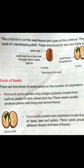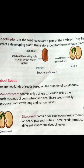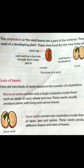Examples of monocot seeds are corn, wheat, and rice. These seeds usually produce plants with long and narrow leaves.